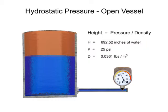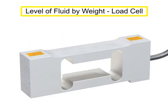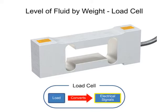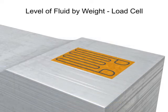Another method of calculating the level of material in a vessel by weight is using load cells. Load cells are comprised of a strain gauge bonded to a support and convert a force or load to an electrical signal. As force or weight is applied to the load cell, the strain gauge deforms and causes the electrical resistance to change.